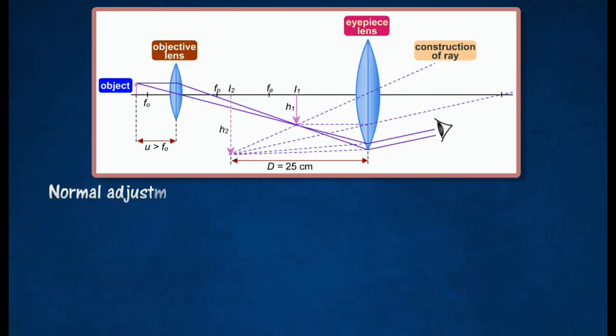In normal adjustment, the final image I2 is formed at the least distance of distinct vision, d, equal to 25 cm from the eyepiece, to produce highest magnification.